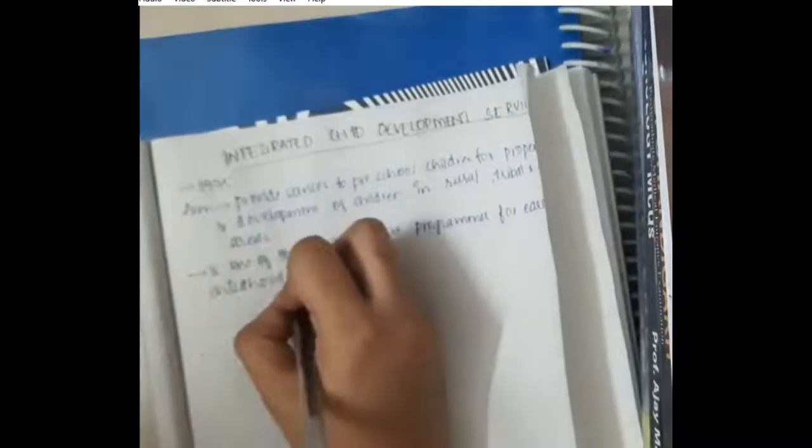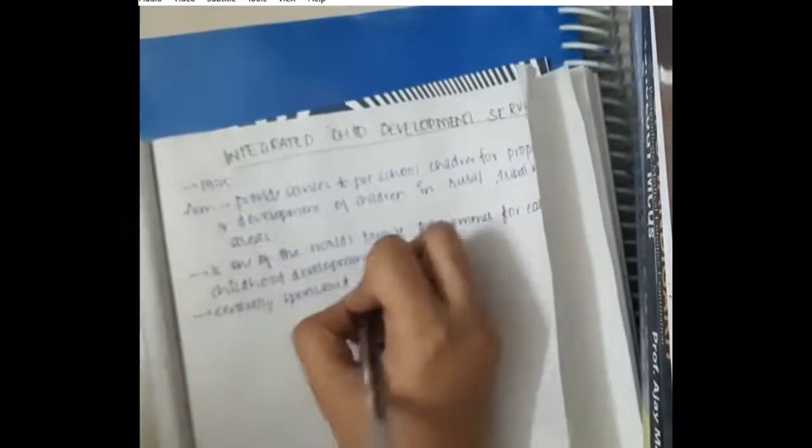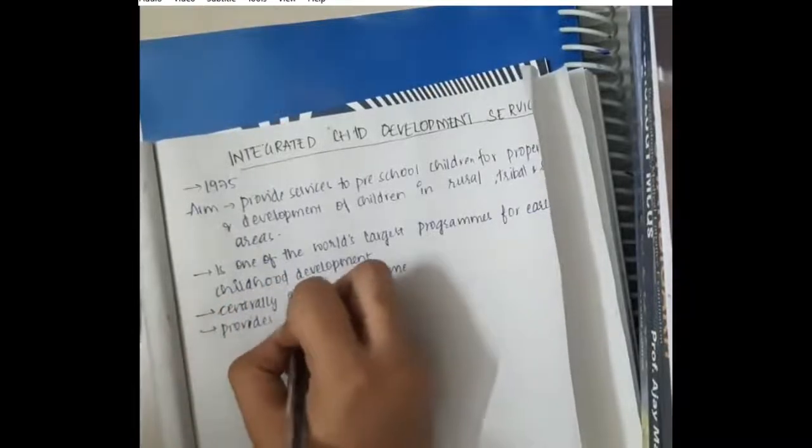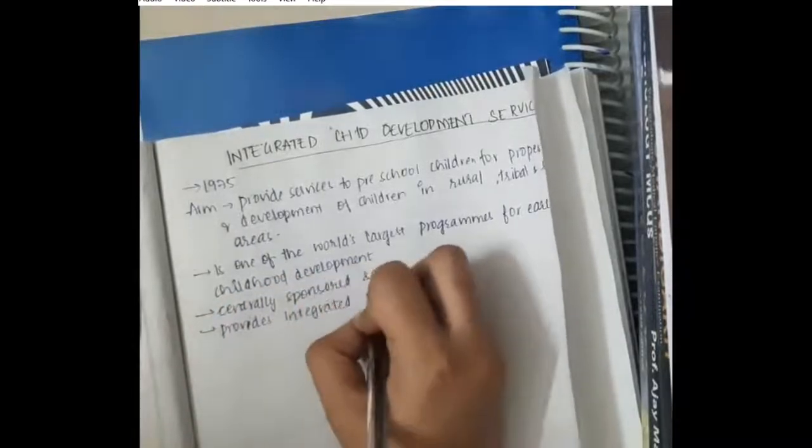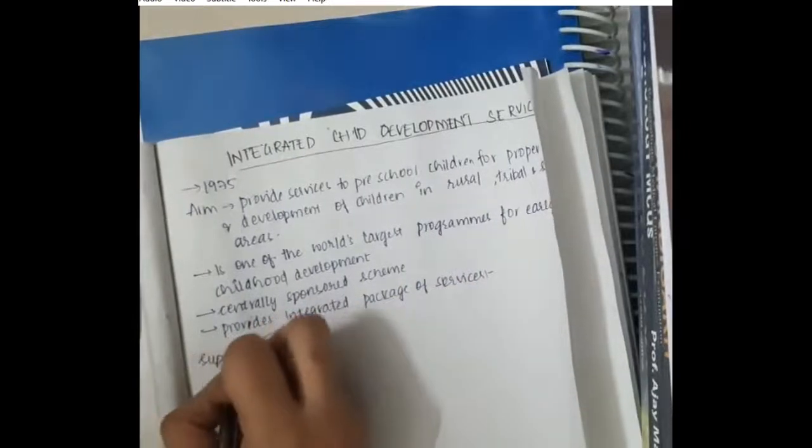ICDS is a centrally sponsored scheme. It provides an integrated package of many services which are essential for the growth of children.